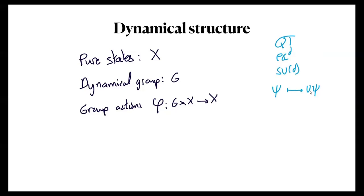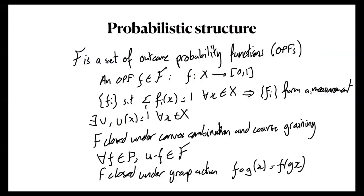Systems also have what's called a probabilistic structure — a set F of outcome probability functions, or OPFs. These are functions that tell you the probabilities of different outcomes. Naturally, an OPF takes every element of the set of pure states to the [0,1] interval. There are conditions such that they form measurements: there exists a unit OPF, they're closed under convex combinations and coarse grainings, there's the complement, and they're closed under the group action.